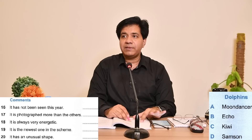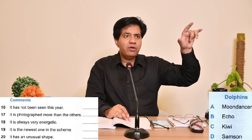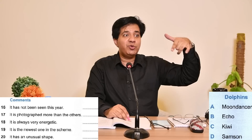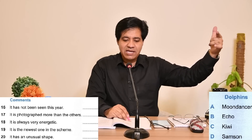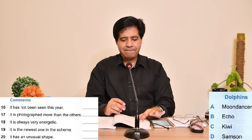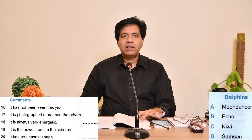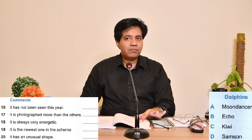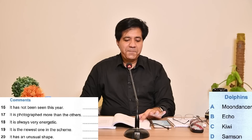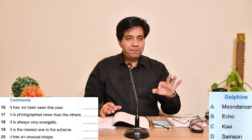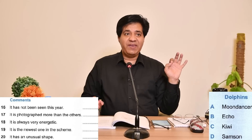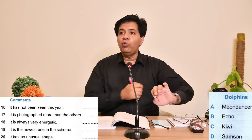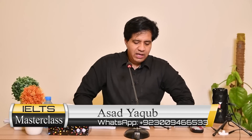Question number 20: it has an unusual shape. For unusual they can use the words unique, different, antique, or anything like that. Kiwi makes a lot of noise so we can often pick her out straight away. Echo and Moon Dancer are noisy too, but Moon Dancer is easy to find because she has a particularly large fin on her back which makes her easy to identify. So the answer is A — Moon Dancer with the particularly large fin.